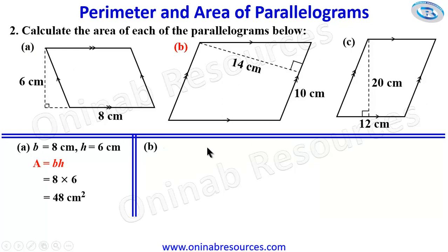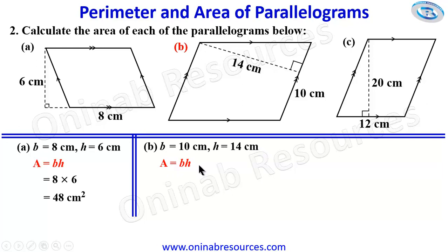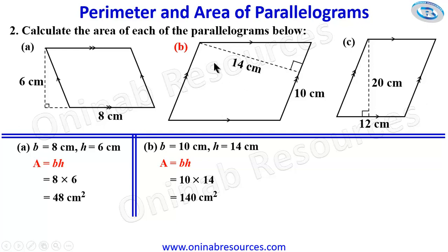For part 2B, we are given the base as 10 cm and the height as 14 cm. Substituting into the formula A = base × height, we have 10 times 14, which gives 140 square cm as the area of the parallelogram in part B.